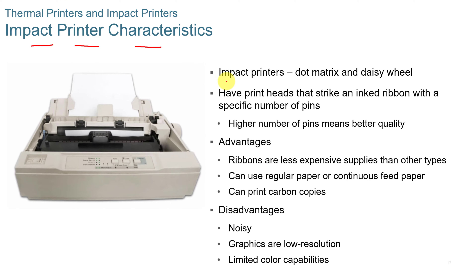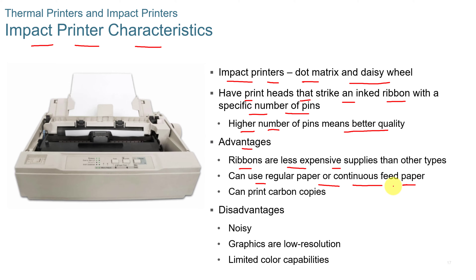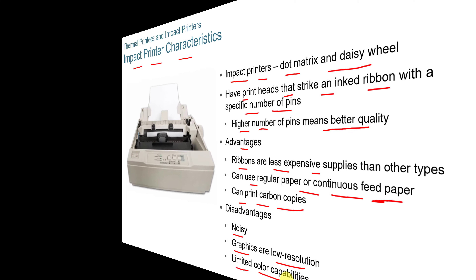Impact printer characteristics. Impact printers are the dot matrix or daisy wheel type. You may still see these in the workplace — they are still sold. They have print heads that strike an inked ribbon with a specific number of pins, and a higher number of pins means better quality. The advantages are ribbons are less expensive, they can use regular paper or continuous feed paper, and they can print carbon copies. The disadvantages are they're noisy, graphics are low resolution, and they have limited color capabilities.